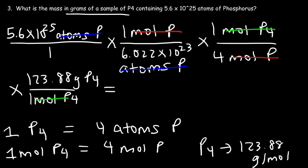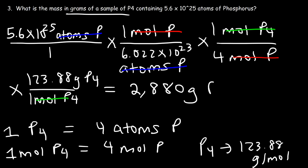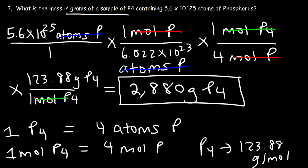In other problems, if you're going from grams to atoms, you would multiply by 4. But if you're going from atoms to grams, you need to divide by 4. The final answer, rounded to the nearest whole number, is 2,880 grams of P4. That's equivalent to about 2.88 kilograms.